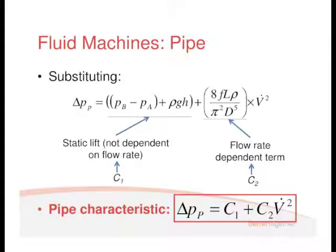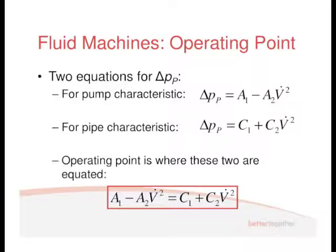So we've got a pump characteristic, which is the A terms. We've got a pipe characteristic, which is the C terms. And you can match them together. We've got two equations for delta PP. For pump characteristic: delta PP = A1 minus A2 V dot squared. For pipe characteristic, you've got delta PP = C1 plus C2 V dot squared. You put them together, you end up with this equation. So this is due to the pipe, this is due to the pump.